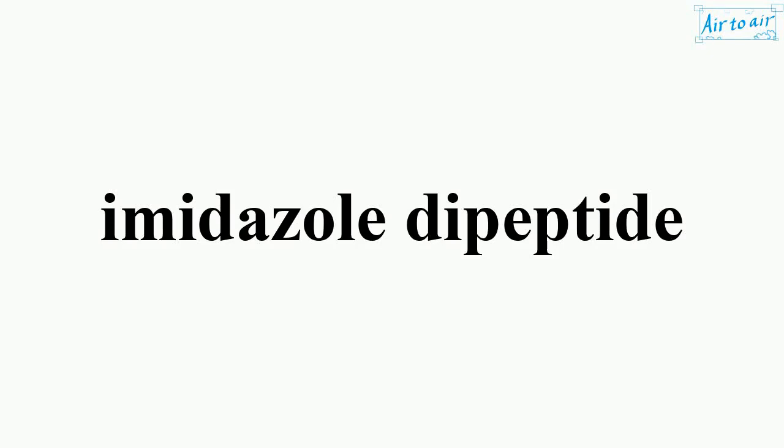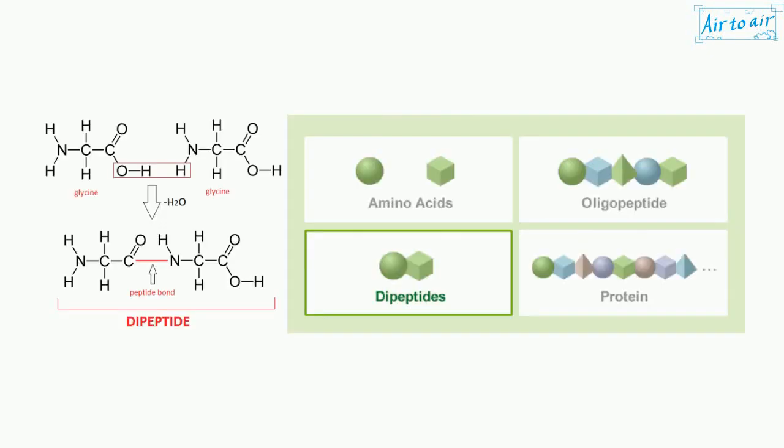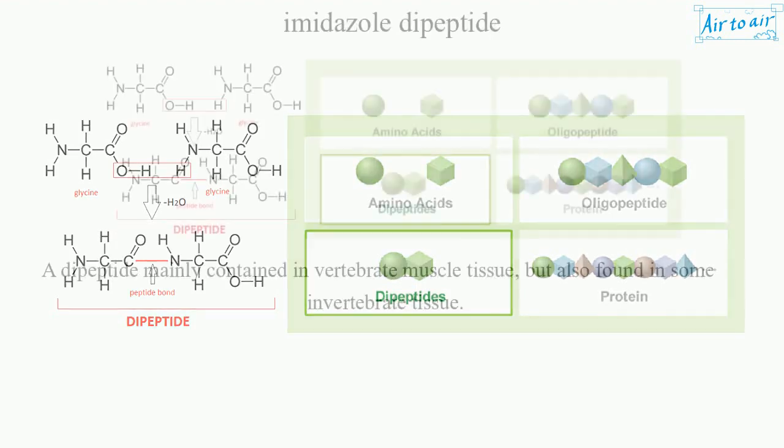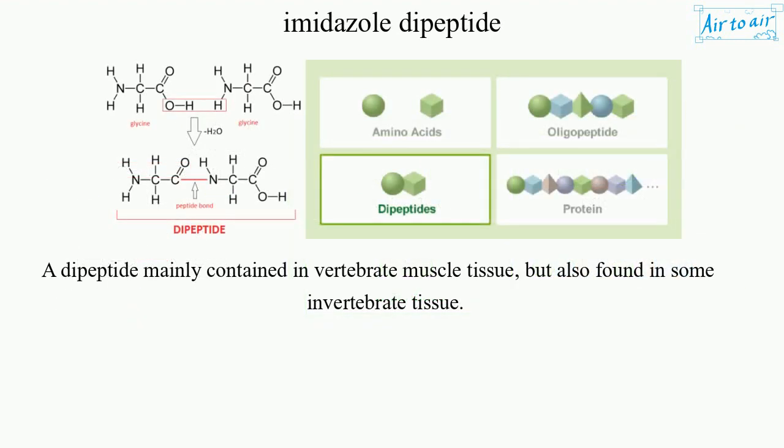Imidazole dipeptide. A dipeptide mainly contained in vertebrate muscle tissue, but also found in some invertebrate tissue.